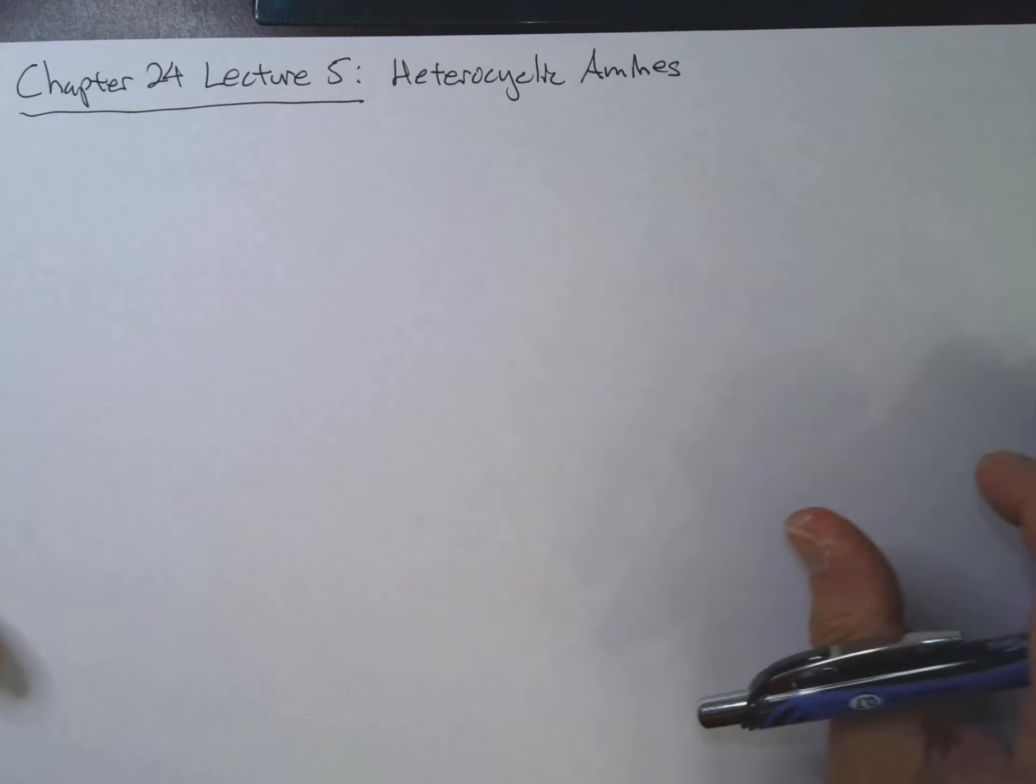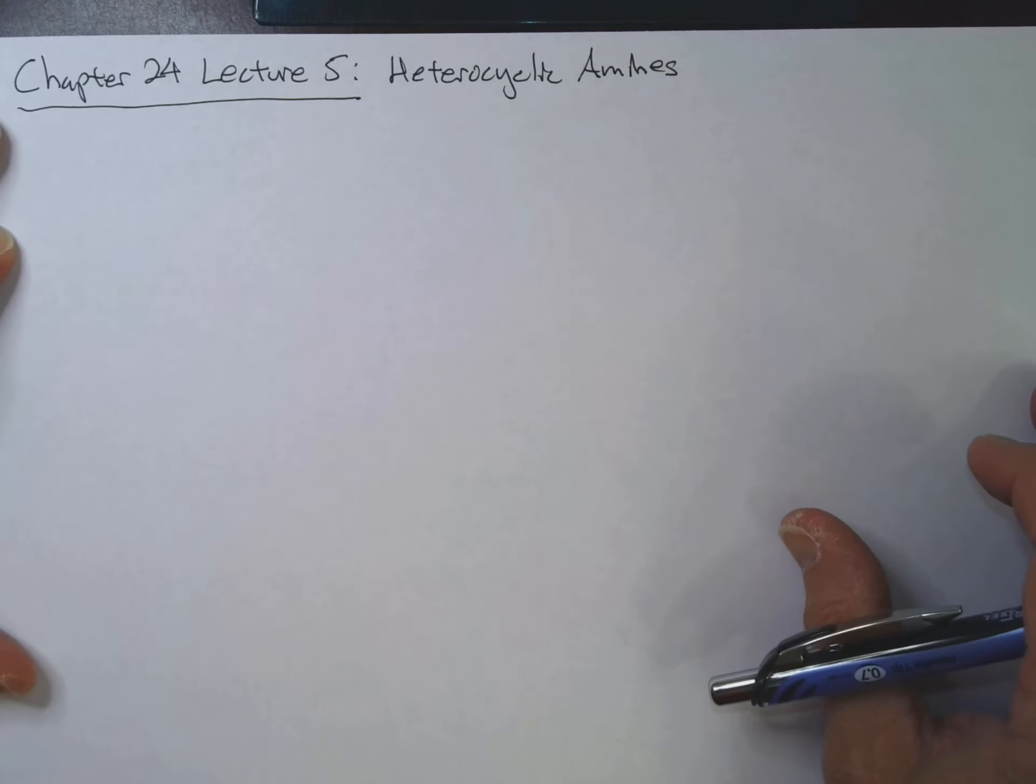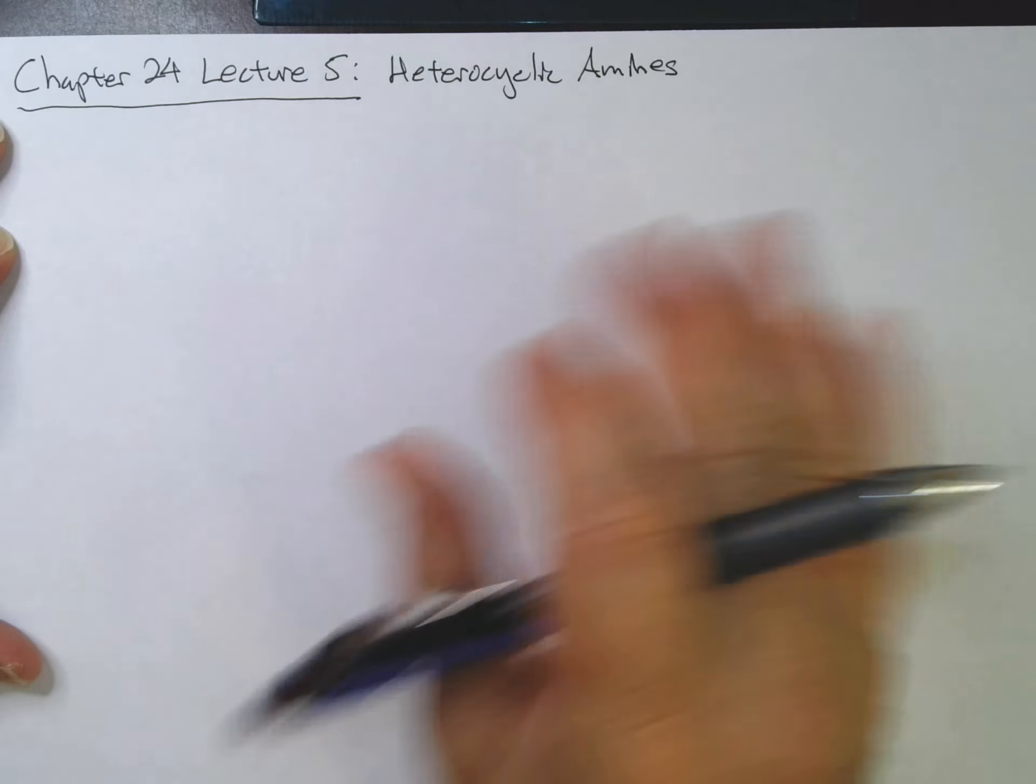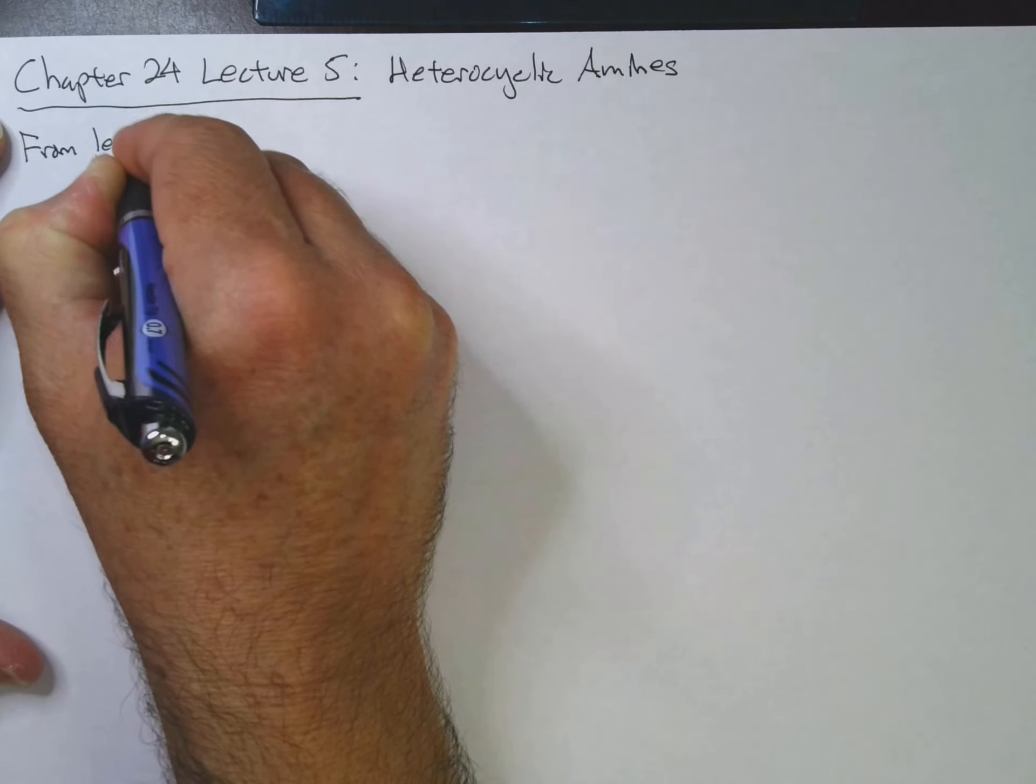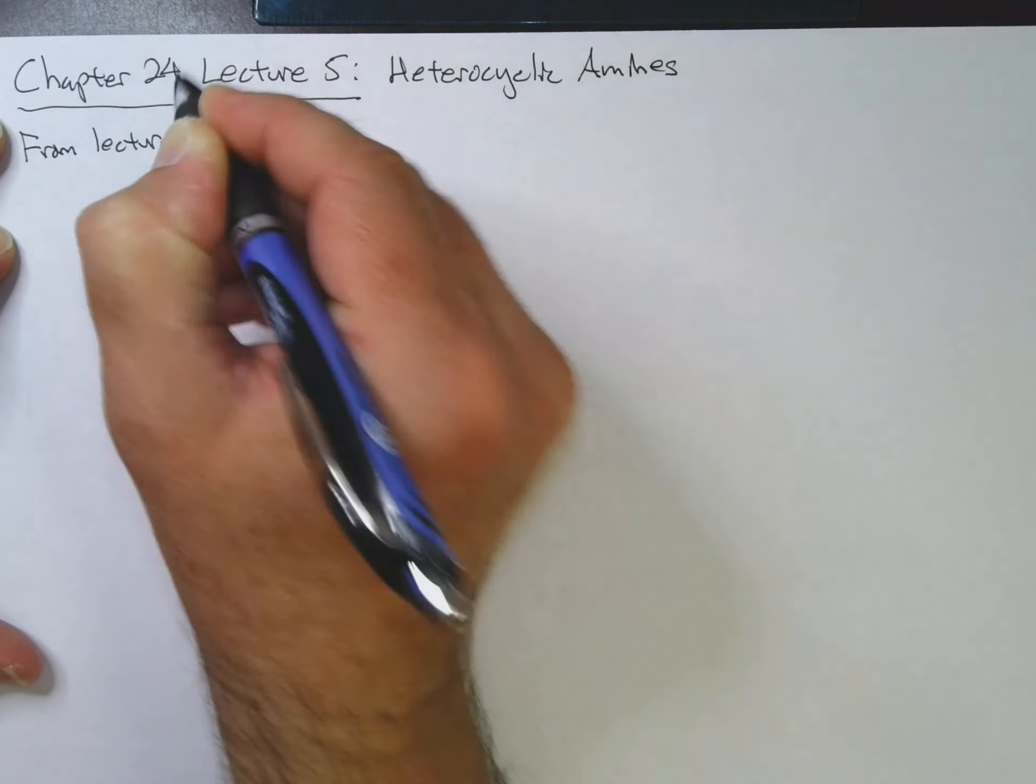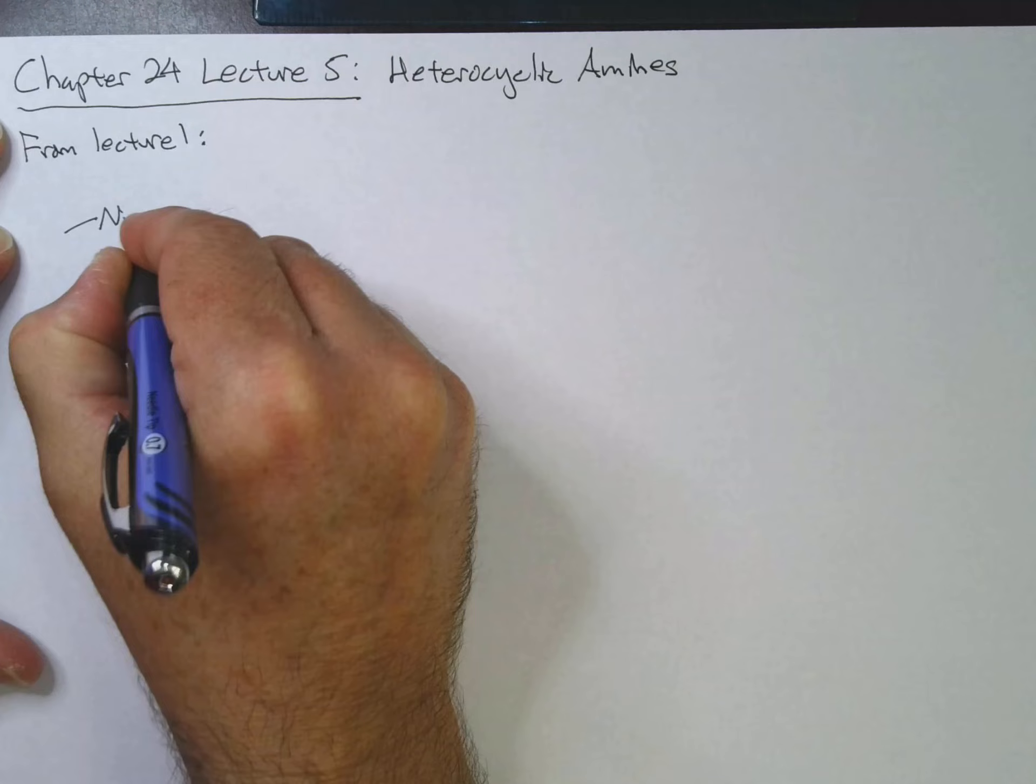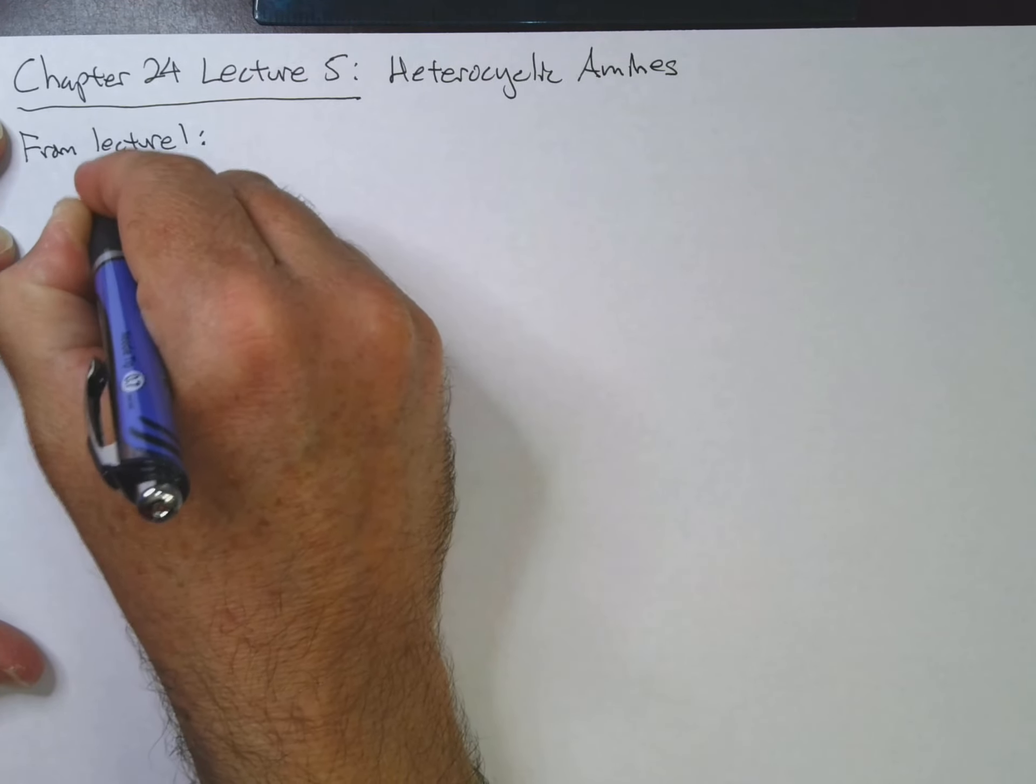Hi again everybody, it's Dr. P here and in this lecture, the last one for chapter 24, we'll take a closer look at some heterocyclic amines. So from lecture one, you may remember we've got cyclic molecules that contain nitrogen in the ring.